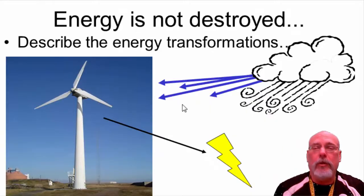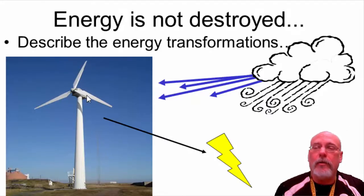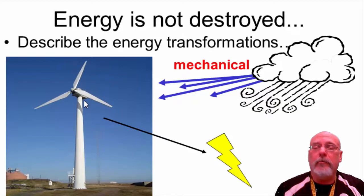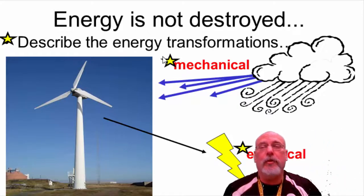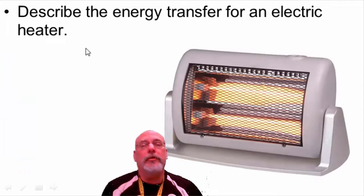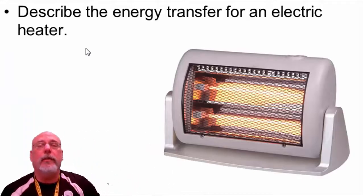Let's look at specific energy transformation examples. A wind turbine: the wind blows and spins the turbine, which moves a magnet inside a spool of wire — that's the generator. The wind blowing is mechanical energy, the turbine spinning is mechanical energy, and the generator produces electrical energy. So a wind turbine converts mechanical energy to electrical energy.